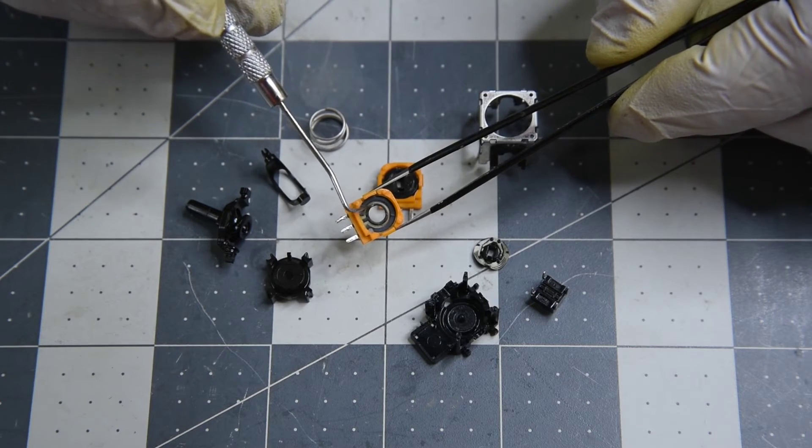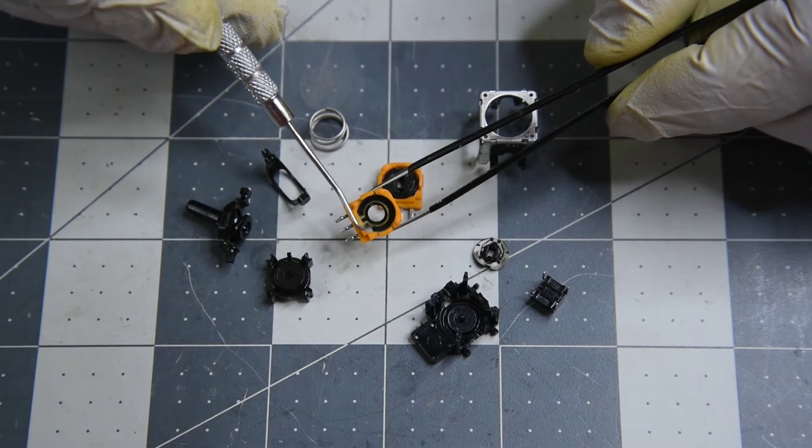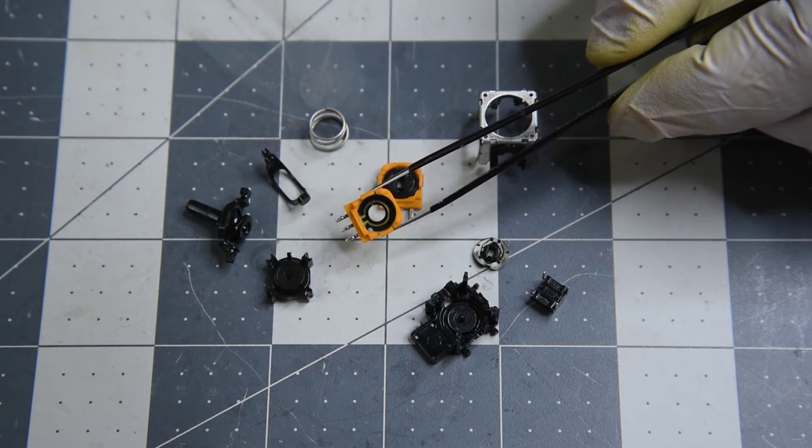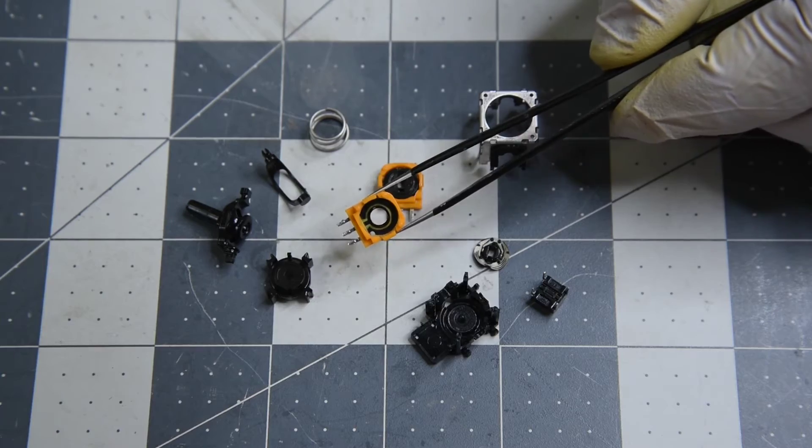It's hard to see here, but some of the resistive material is missing from the potentiometer element. Did it last the 2 million operations it's rated for? I kind of doubt it. But they do take quite a bit of abuse.